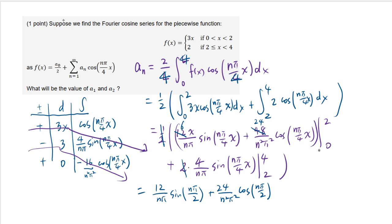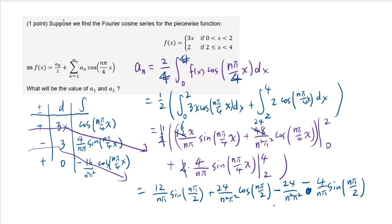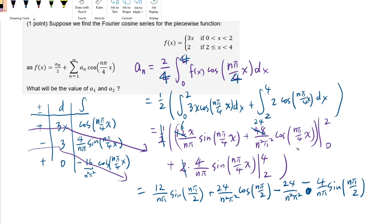Now subtract the lower limit: plugging in 0, sine(0) is 0, and cosine(0) is 1, so we subtract 24 over n squared pi squared. For the second integral, plugging in 4 gives sine(n pi) which is 0. Plugging in the lower limit of 2 gives 4 over n pi · sine(n pi over 2), but by the fundamental theorem of calculus this must be subtracted, so it becomes minus 4 over n pi · sine(n pi over 2). Let's tidy that up.